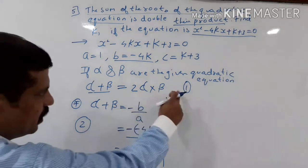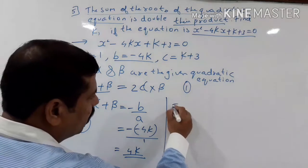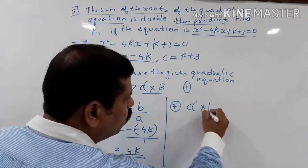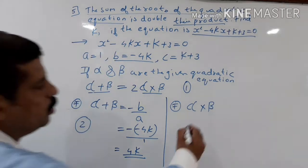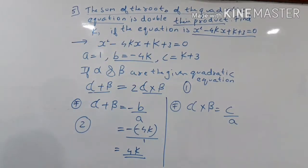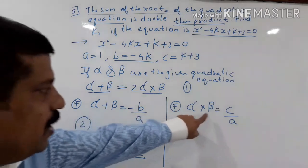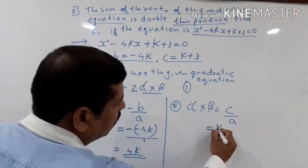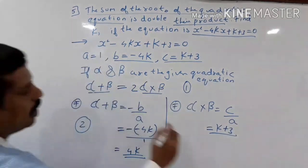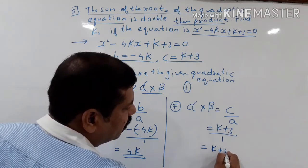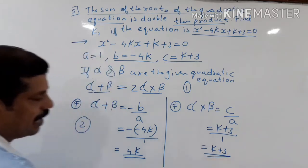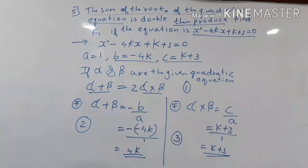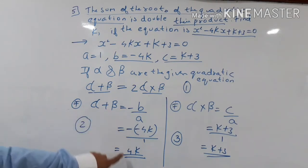Second formula: alpha into beta equals c upon a. C value is k plus 3, A value is 1. So alpha into beta equals k plus 3 upon 1, which equals k plus 3.